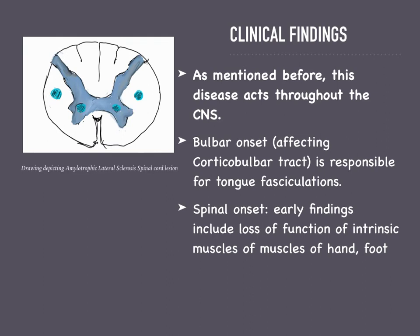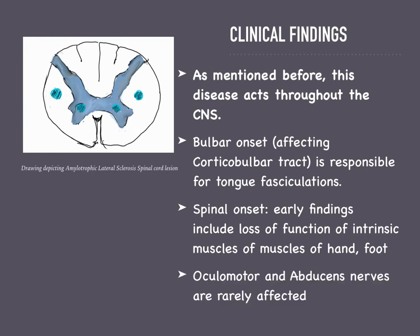If there is a spinal onset, the intrinsic muscles of the hands and/or feet will be an initial presenting clinical finding. An interesting fact about amyotrophic lateral sclerosis is that the oculomotor and abducens nerves are rarely affected — these are the nerves that innervate the extraocular muscles.